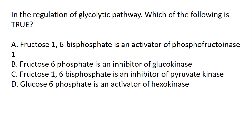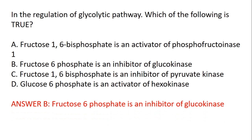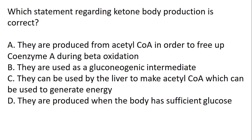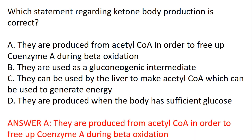In the regulation of the glycolytic pathway, which of the following is true? The answer is B: fructose-6-phosphate is an inhibitor of glucokinase. Which statement regarding ketone body production is correct? The answer is A: they are produced from acetyl-CoA in order to free up coenzyme A during beta-oxidation.